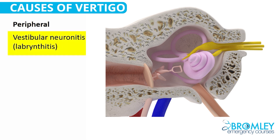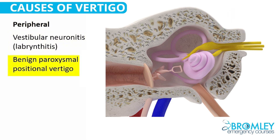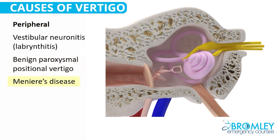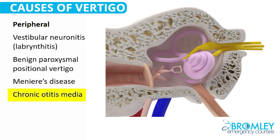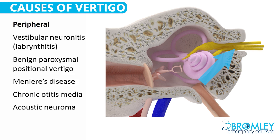Peripheral causes of vertigo include: firstly, vestibular neuronitis — an issue with the vestibular nerve itself; secondly, benign paroxysmal positional vertigo, related to otoliths within the utricle and the posterior semicircular canal; thirdly, Meniere's disease, caused by abnormal pressure within the endolymph; then damage from chronic middle ear infection — suppurative otitis media; and finally, acoustic neuroma, a benign tumour affecting the vestibulocochlear nerve. The top three of these account for approximately 95% of peripheral causes of vertigo.